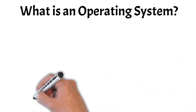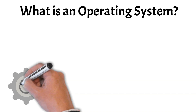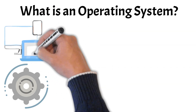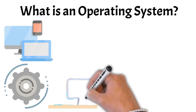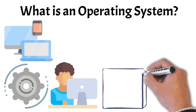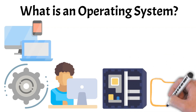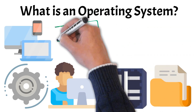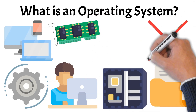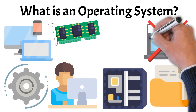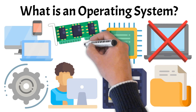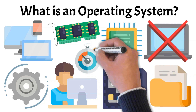An operating system, or OS, is the crucial software that manages a computer or device's hardware and software, making it possible for users to interact with their devices. Acting as an intermediary between the user and the machine, the OS ensures that everything runs smoothly by providing a platform for applications to execute and managing access to hardware resources. From simple tasks like opening a file to complex operations like managing memory and networking, the OS makes it all possible. Without an operating system, a computer would be unable to perform any tasks and the hardware would remain inert. It's the backbone of any device, whether it's a smartphone, laptop, or server, and its efficient operation is key to the overall performance of the system.